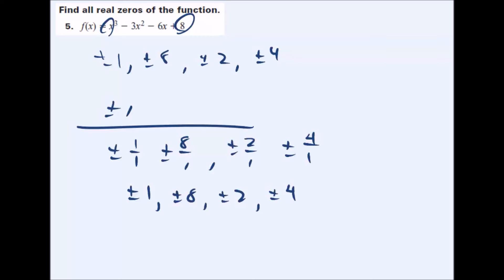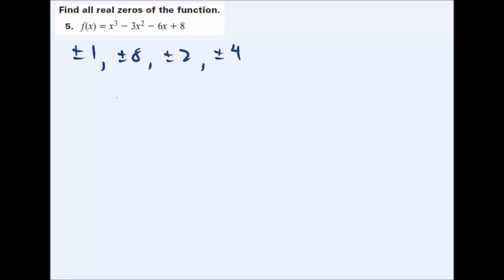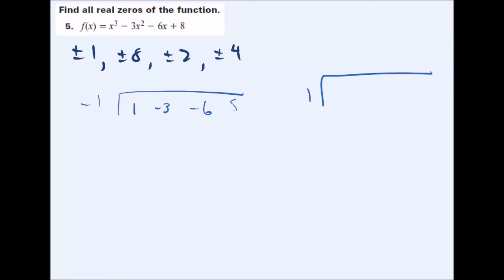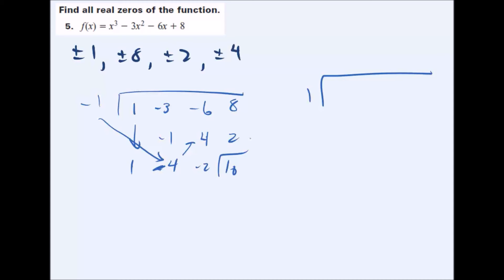Now we take those possible zeros and determine which are actual real zeros using synthetic division — it's essentially guesswork. If a value is a real zero, synthetic division will give no remainder. If there is a remainder, it's not a zero and you move on. Let's start by checking negative one: put in the coefficients, bring down the first one. Negative one times one is negative one; adding gives negative four; continuing gives a remainder of ten, so negative one is not a zero.